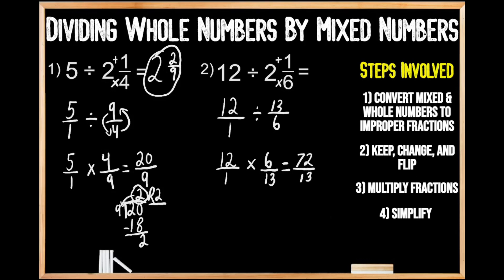Now for step number four, we simplify the fraction 72 thirteenths. There's no common multiple between 72 and 13 other than one, so it's already in its lowest possible terms. But we need to convert this improper fraction into a mixed number by dividing 72 by 13. We can't make a group of 13 out of seven, so we move on — we can make five groups of 13 out of 72. We multiply five times 13 to get 65, then subtract 65 from 72, leaving us with seven. So 72 divided by 13 gives us five with a remainder of seven.